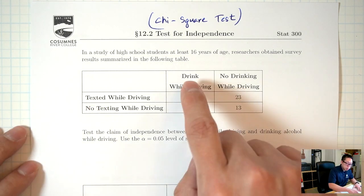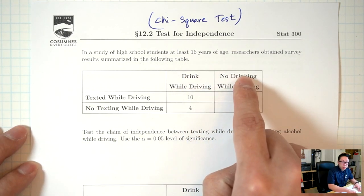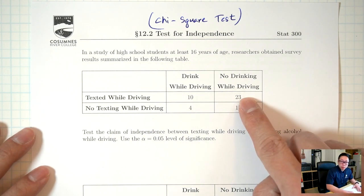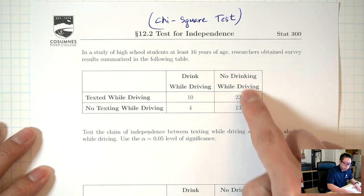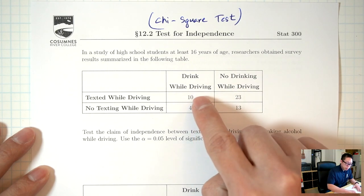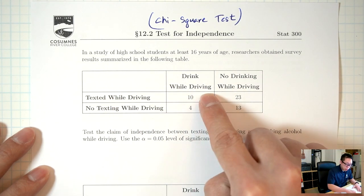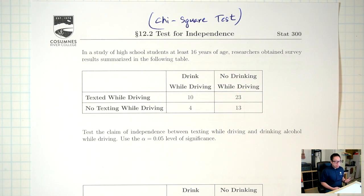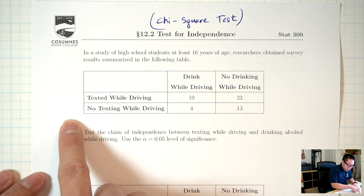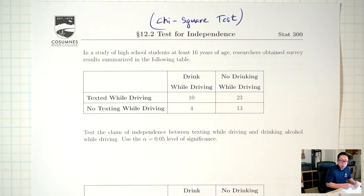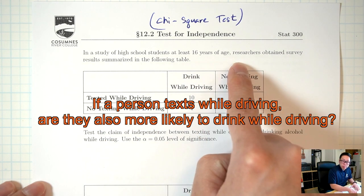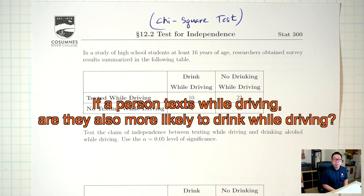Yes or no. And do you drink and drive? This 23, for instance, means there are 23 people who text and drive but don't drink and drive. This 10 means there are 10 people who text and drive and also drink and drive. And the question we're asking here is: is texting related at all to drinking? In other words, is texting independent or not independent from drinking? And this is why this is called a test for independence.